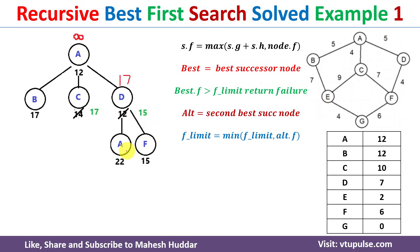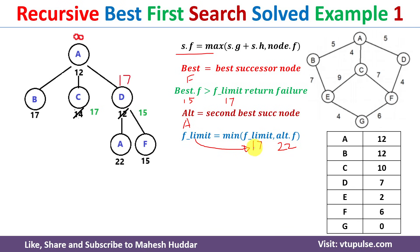With f-limit=17 we recalculate f-values for D's successors: f(A)=22, f(F)=15. F has the minimum, so best = F. best.f (15) > f-limit (17)? No. The alternate is A with f=22. New f-limit = min(17, 22) = 17. We now expand F with f-limit=17. F is not the goal node, so we find its successors.